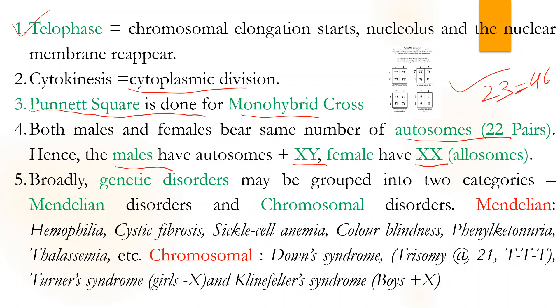Females have XX chromosomes, so the progeny's sex — whether male or female — depends on the male, not on the female. Next, genetic disorders can be put into two categories: first is Mendelian and second is chromosomal. Mendelian examples include hemophilia, cystic fibrosis, sickle cell anemia, color blindness, phenylketonuria, and thalassemia.